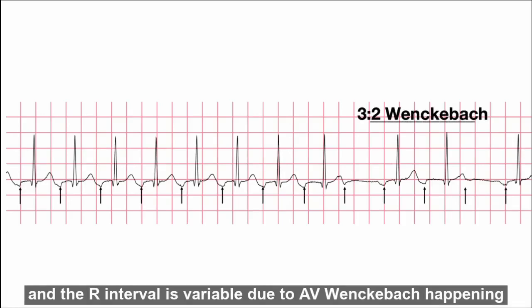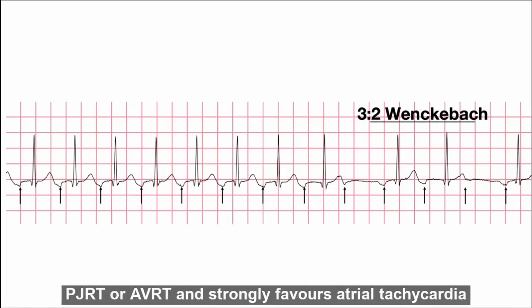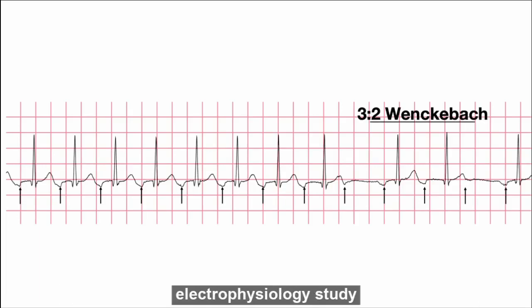This is due to AV Wenckebach happening at the AV node, and the presence of AV Wenckebach rules out PJRT or AVRT and strongly favors atrial tachycardia. This patient had focal atrial tachycardia arising from the lower crista terminalis, which was successfully ablated during electrophysiology study.